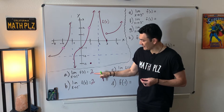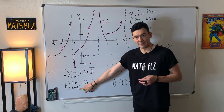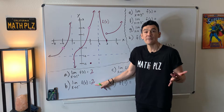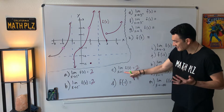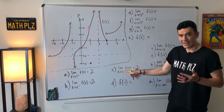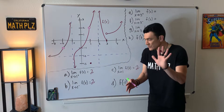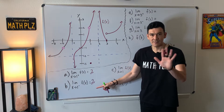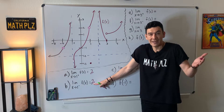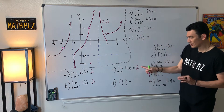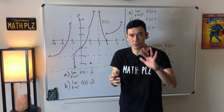What happens if the two one-sided limits had been different? If approaching from the right gave you two but from the left gave you one — or anything different — then the conclusion for the two-sided limit would have been that the limit does not exist. We'll do an example like that soon.